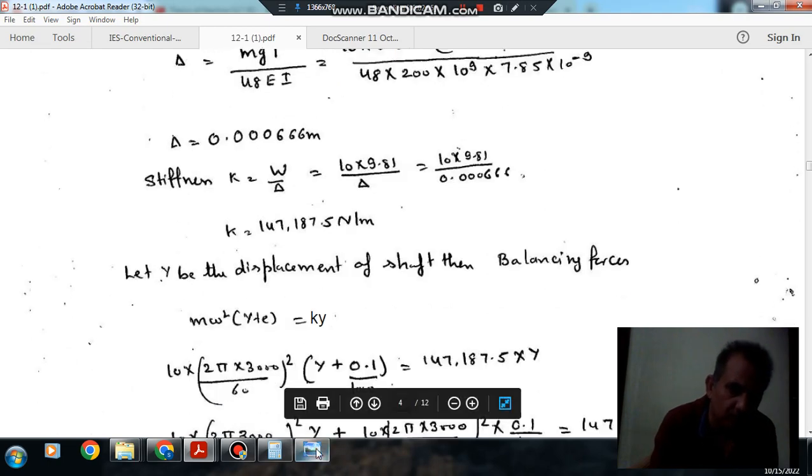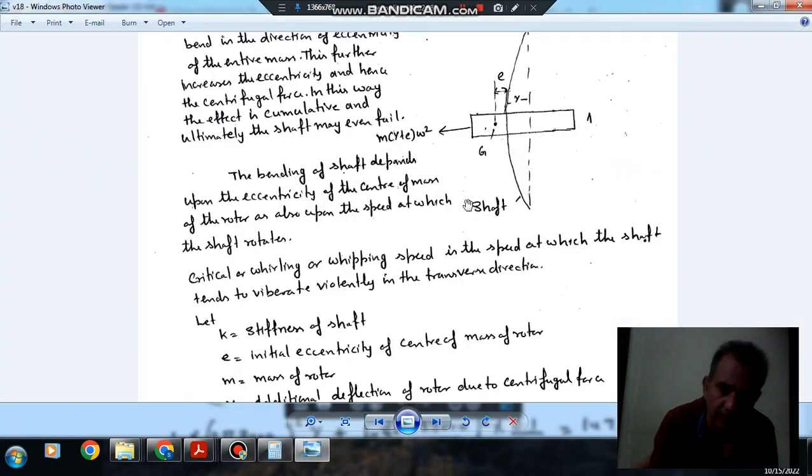Now when the shaft is rotating, there is displacement of the axial shaft. Y is the displacement and E is the eccentricity. Then there will be a centrifugal force at steady state: m(Y+E)ω^2. This centrifugal force is resisted by stiffness force KY.